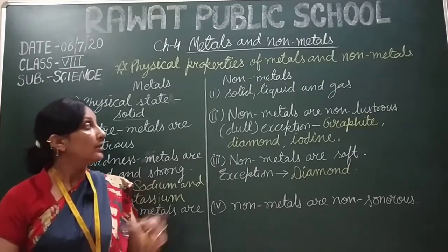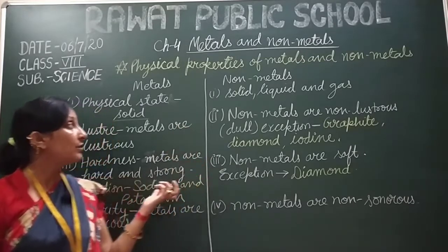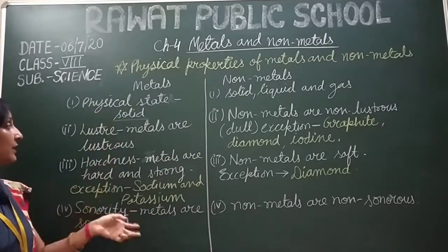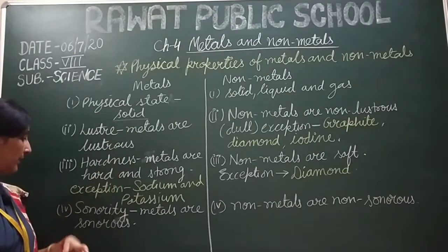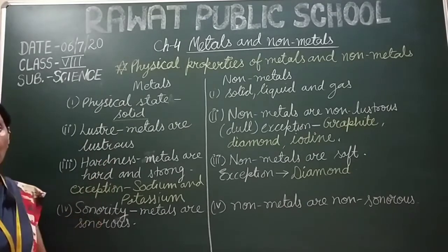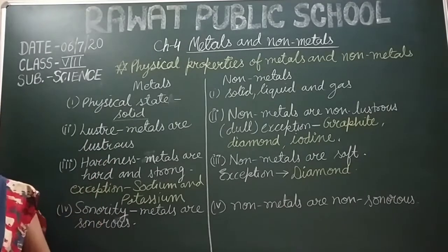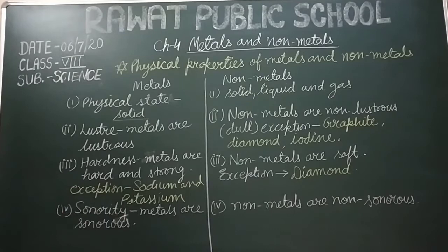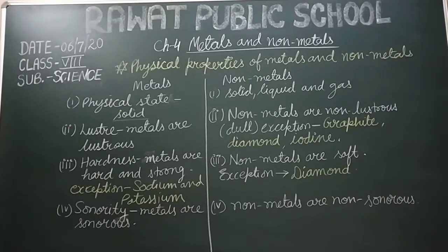So this is the comparison of metals and non-metals on the basis of their physical state, luster, hardness and sonority. Now we will compare the next properties: ductility and malleability, conductivity, and melting and boiling point.